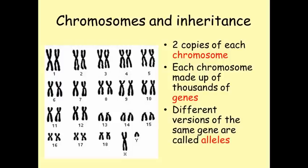For example, everyone has a gene for eye colour, but there are different alleles for this gene. You might have a version of the gene that makes you have brown eyes, or blue eyes, or green eyes. These colours reflect the different alleles that exist for the gene.